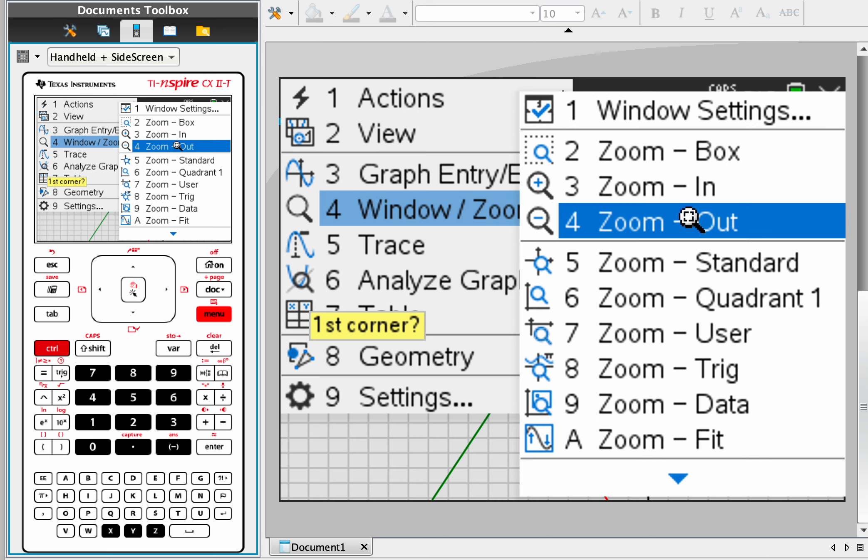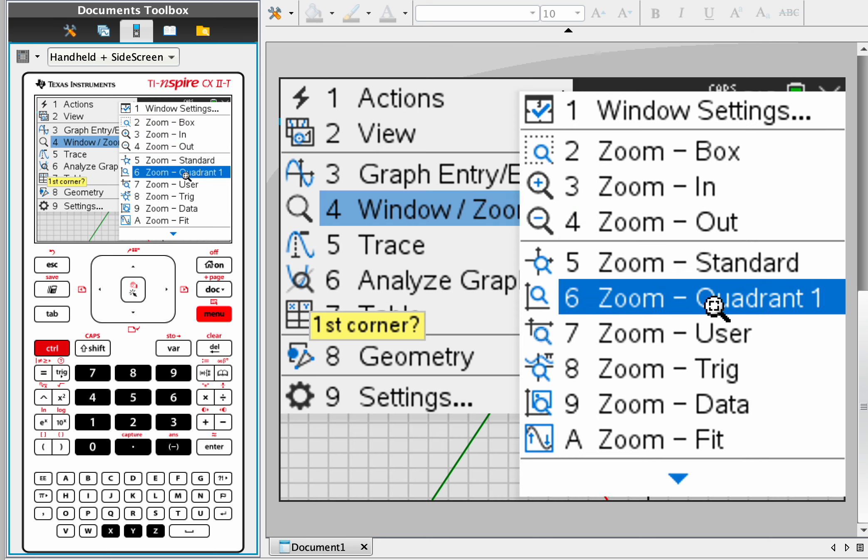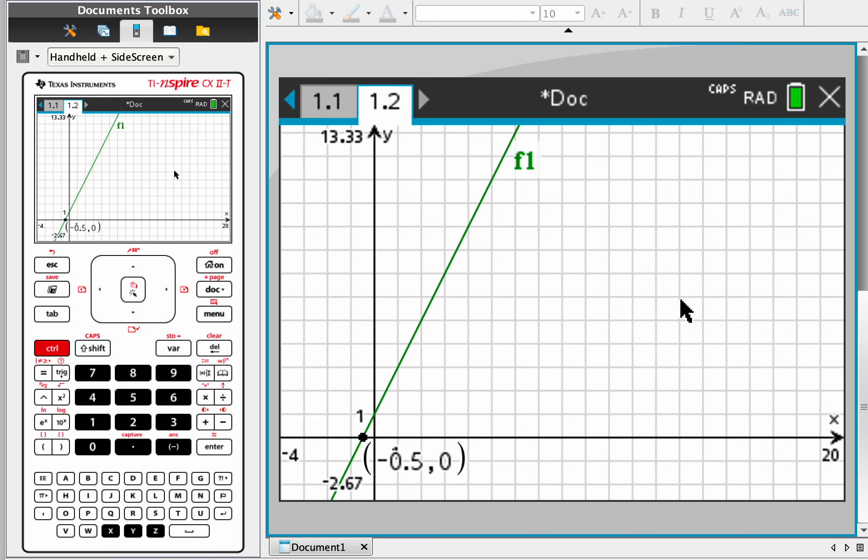There's also zoom in, which is pretty self-explanatory. Let's do quadrant one, very common in a physics context, where maybe you're just looking at the first quadrant. So let's click on that. Maybe this is time, which is only positive, so we don't really care about the negative so much.